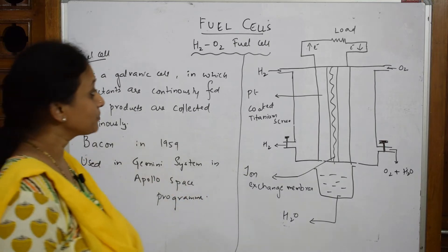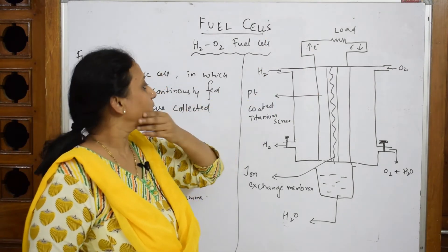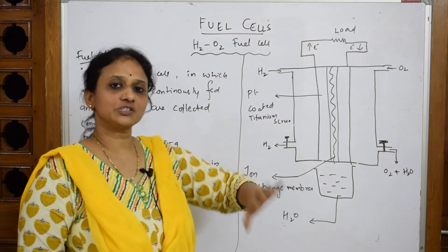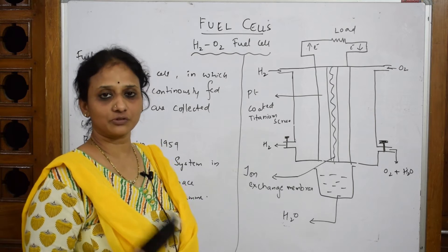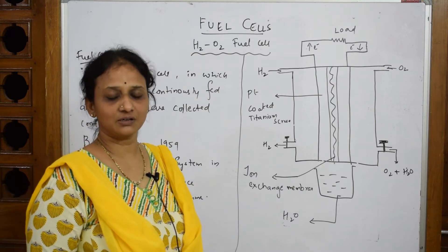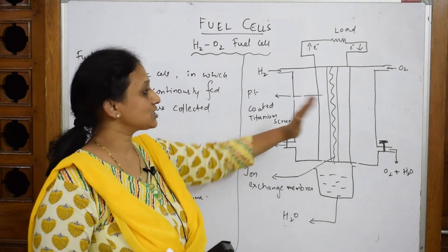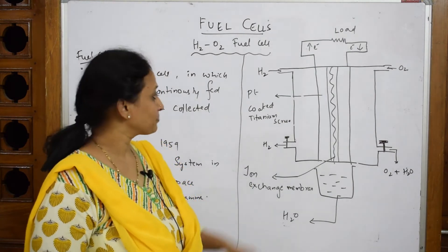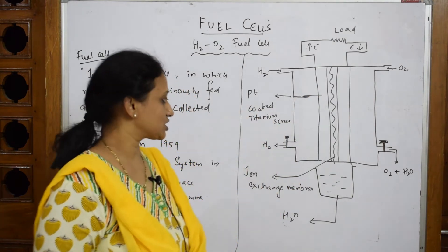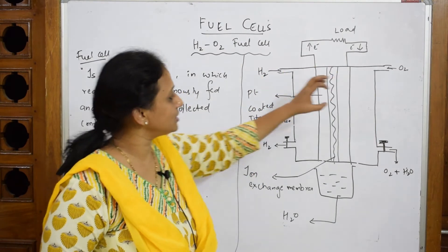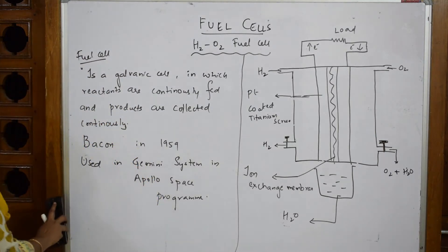In the fuel cell, you have an inlet for hydrogen on one side and oxygen on the other. There's also a voltage shown. The key concept is the release of water — this water was used as drinking water by astronauts. Hydrogen is fed on one side, oxygen on the other. The anodic and cathodic reactions occur, and the byproduct water is released. Inside the center, there is a platinum-coated screen.